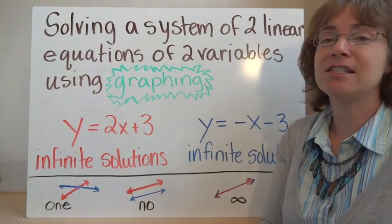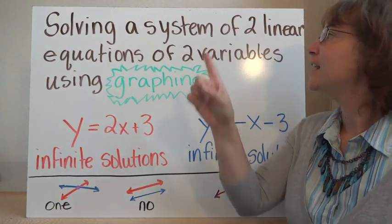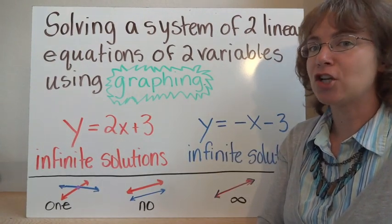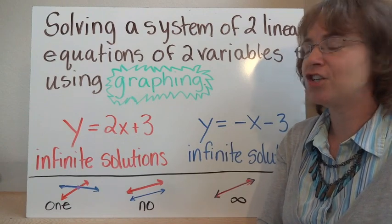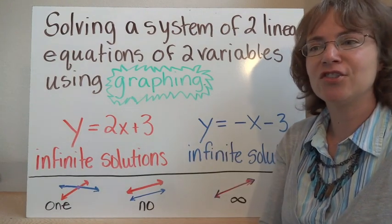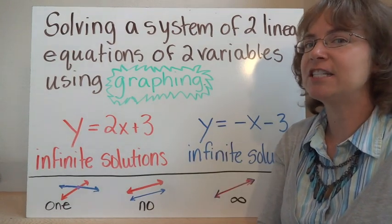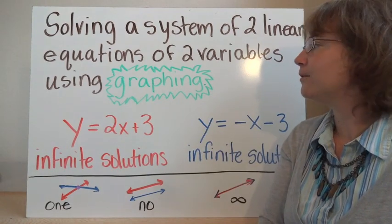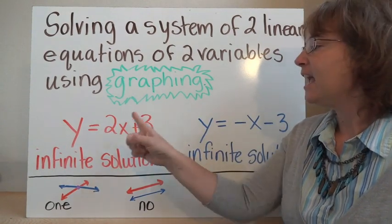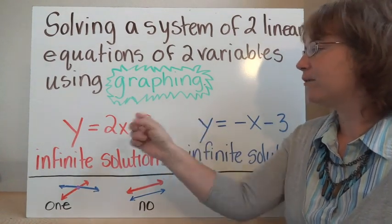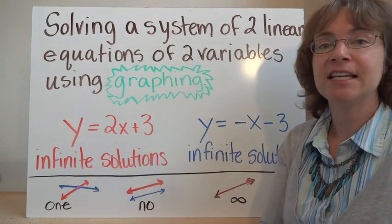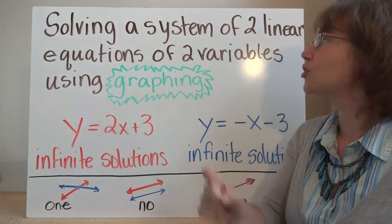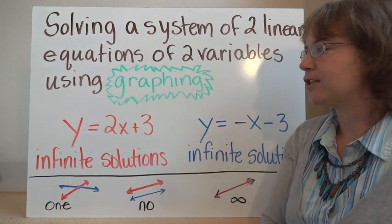Graphing is not my favorite way to solve a system of two equations, mostly because it requires a lot of precision. And if you get a fractional answer, it's really difficult to tell on a graph. It is possible to do, though, with very precise graphs and in easy cases like this. It also works well as a check for some of the other ways to solve a system of two linear equations.